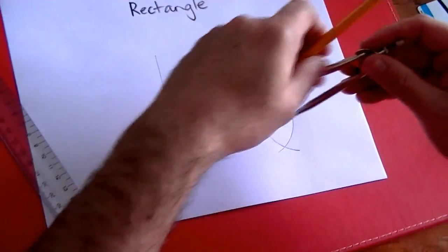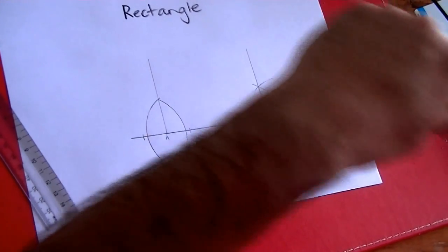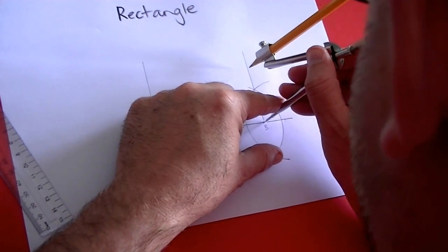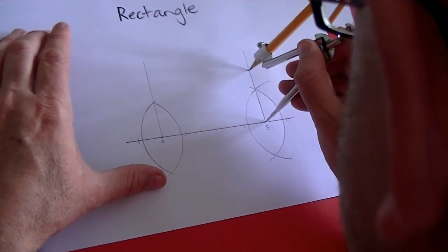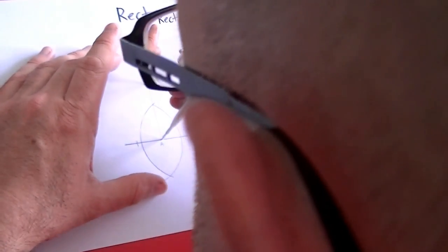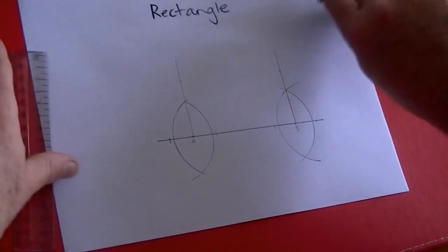I set this for how high I want the rectangle to be. And I'm actually going to make this one nice and high. And I'm going to mark, put a mark there. And I'm going to put a mark on the other side, which, because I'm using the same setting, will be as far up the line.